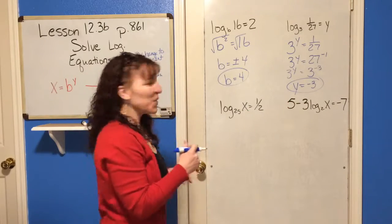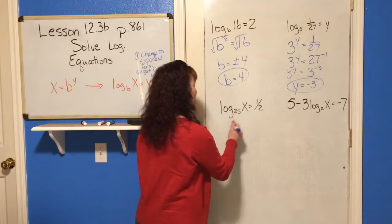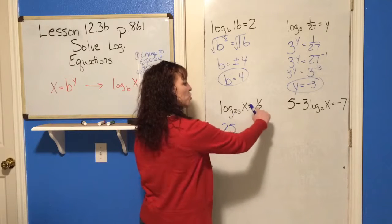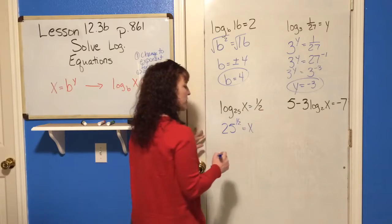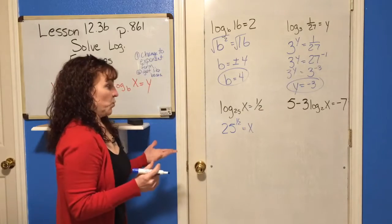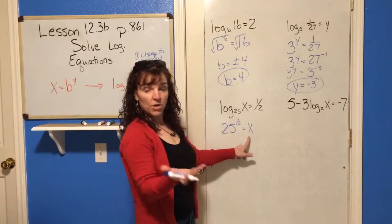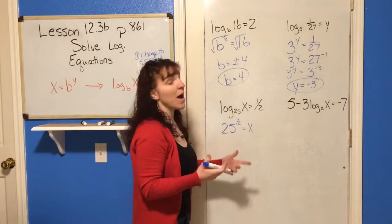This one's going to be a quick lesson also. So, 25 is your base, 25 to the 1 half power equals x. Well, that one is simple, because you've got x on one side of the equation by itself.